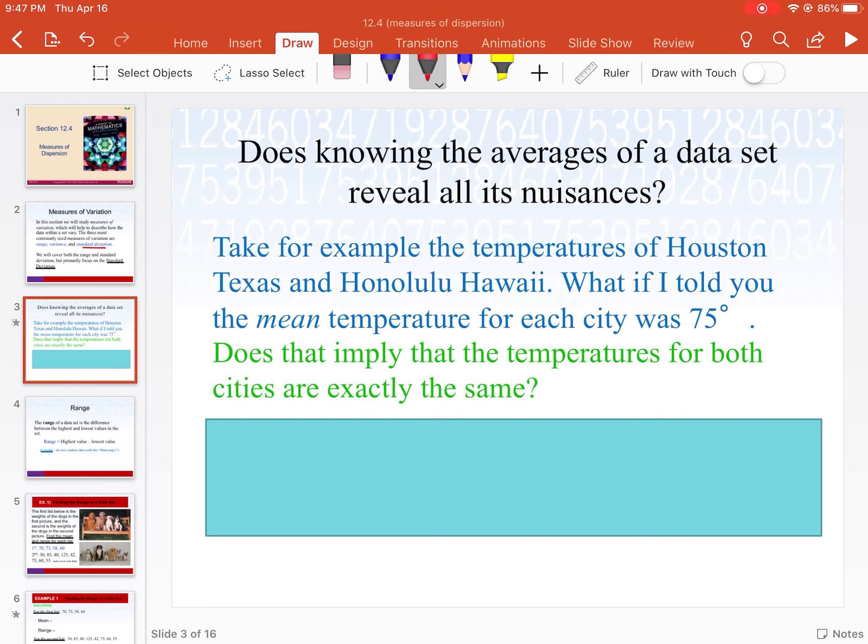Here's another example. Did you know that Houston, Texas and Honolulu, Hawaii have the same mean temperature, same average, 75 degrees? Well does that imply the temperatures for both cities are exactly the same all the time? Well a little bit of common sense, you'd go I don't think so. I mean doesn't Houston have like super hot summers and even snow in certain parts, and Honolulu, well that's like paradise right? Well you're exactly right.